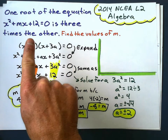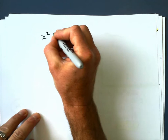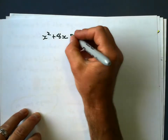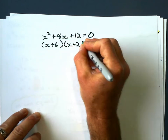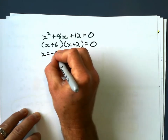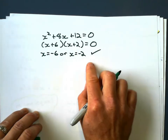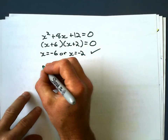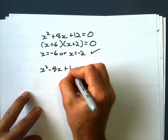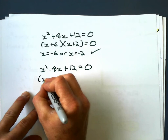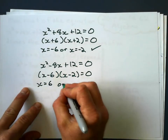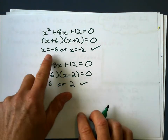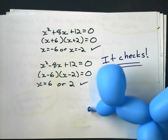Let's substitute m back in to check. If m equals positive 8, we get x squared plus 8x plus 12 equals 0, which factorizes to x plus 6 times x plus 2 equals 0. The roots are negative 6 and negative 2, and negative 6 is indeed 3 times negative 2. If m equals negative 8, it factorizes to x minus 6 times x minus 2 equals 0, giving roots 6 and 2. And 6 is 3 times 2. Both values check out.